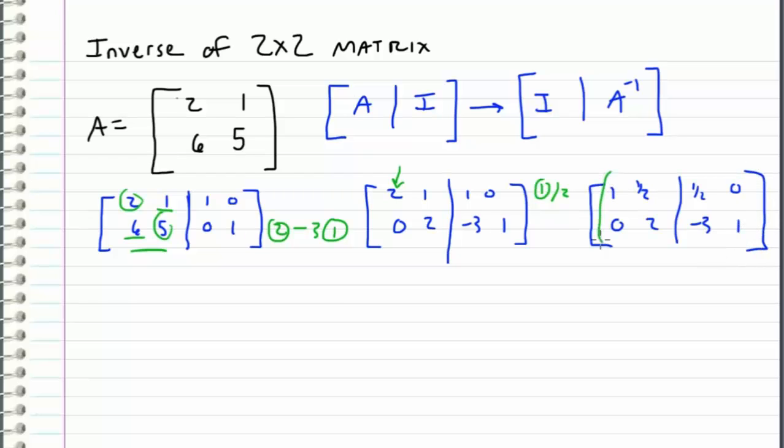So this first column on the left side is good because it matches the identity matrix and now we just need to work with the second column now. So I'm going to take row 2 and I'm going to divide it by 2 in order to get a 1 in the bottom right hand corner.